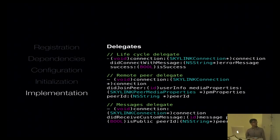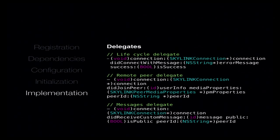These are some of the delegates — I'm listing one from each category. For the connection delegate, when there's a successful connection being made, that's the method that's called. When the peer joins, that's the second one. And the last one, when a message is received. One thing to note about messaging is that we have support for both the data channel as well as the signaling path. So there's support for both one-to-one messages and broadcast messages, whichever your app requires.